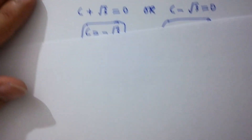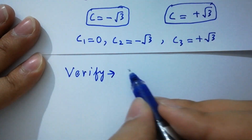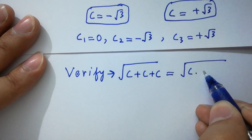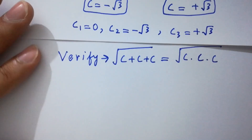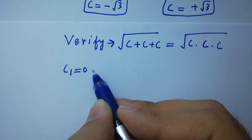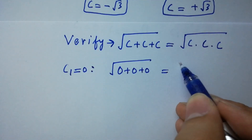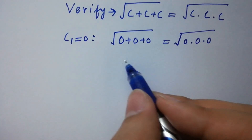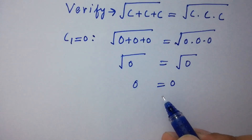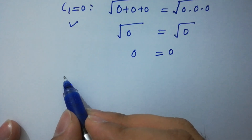In the next step, I am going to verify the equation square root of c plus c plus c equals square root of c times c times c. First of all, taking c1 equals 0: the left hand side gives square root of 0 plus 0 plus 0 equals 0, and the right hand side gives square root of 0 times 0 times 0 equals 0. Left hand side equals right hand side, which shows that c equals 0 satisfies the equation.